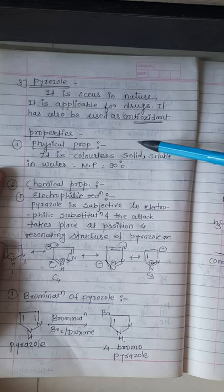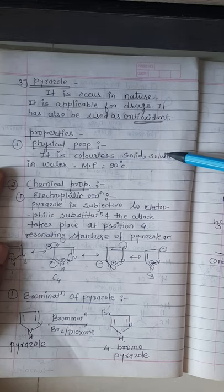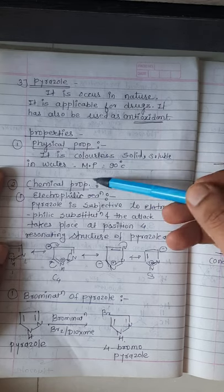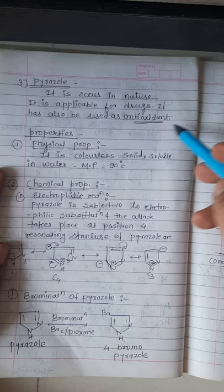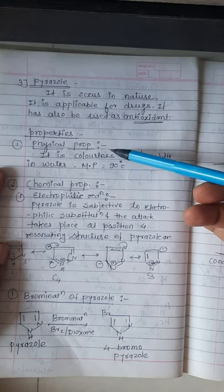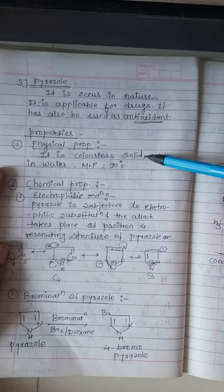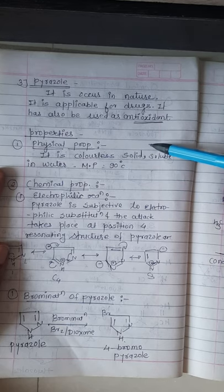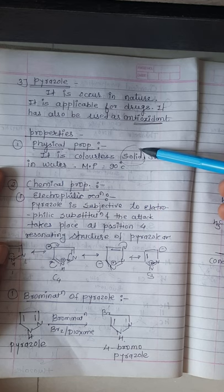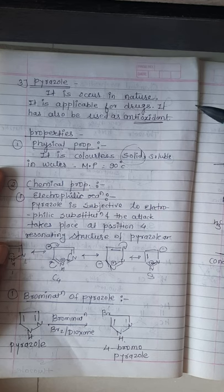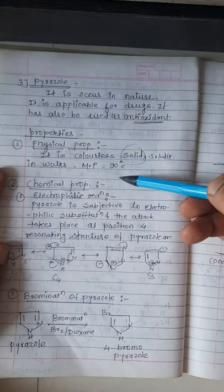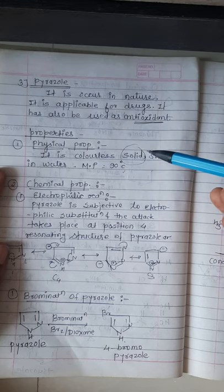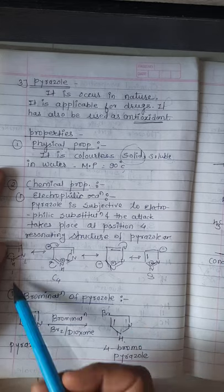The physical properties of pyrazole: it is a colorless solid, soluble in water, with a melting point of 90 degrees centigrade. Pyrazole is a colorless compound, it exists in solid form, it is soluble in water, and its melting point is 90 degrees centigrade.